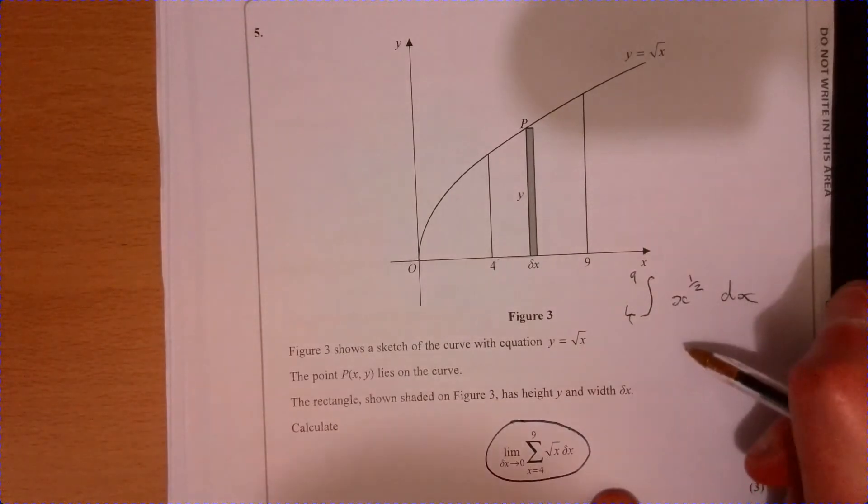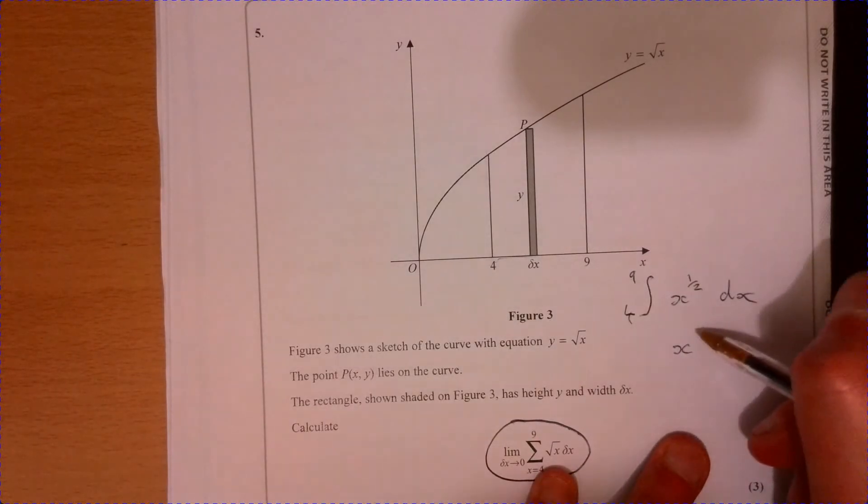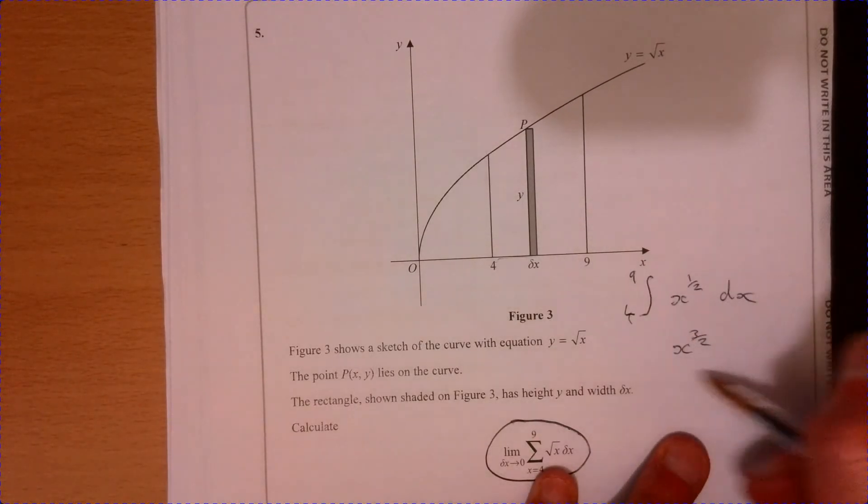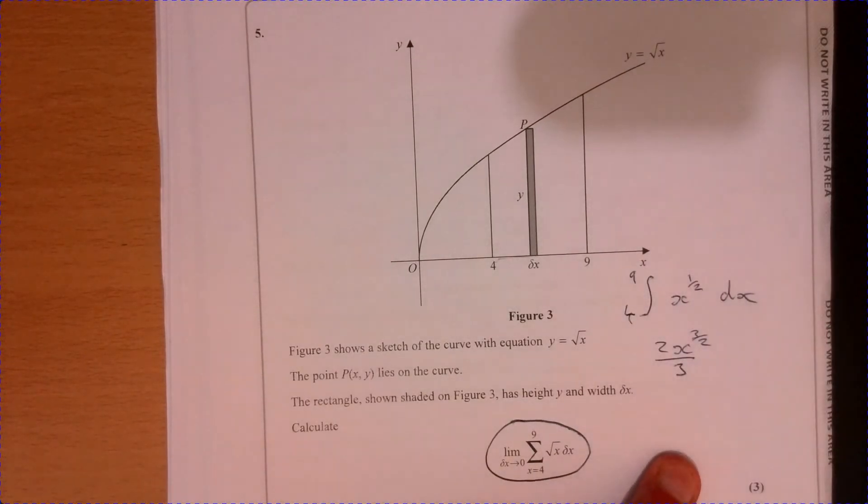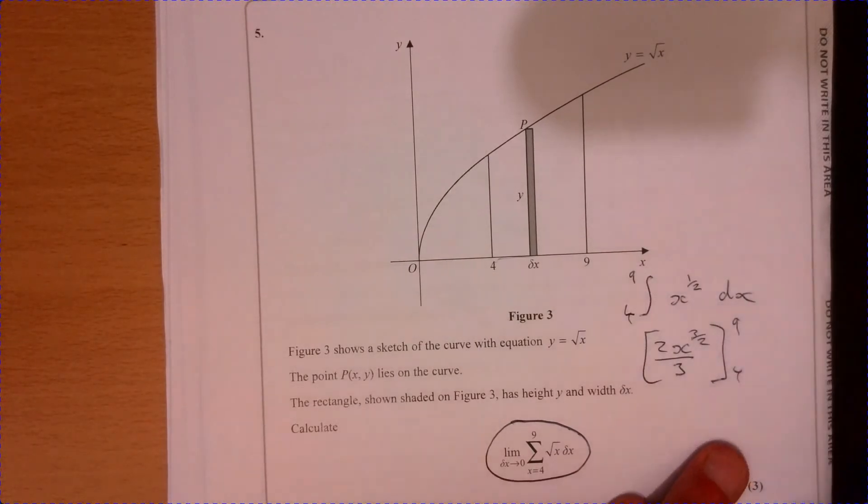So if we integrate this, that's going to be x to the three over two, divided by three over two. So that's times by two over three. And then sub in the nine and the four.